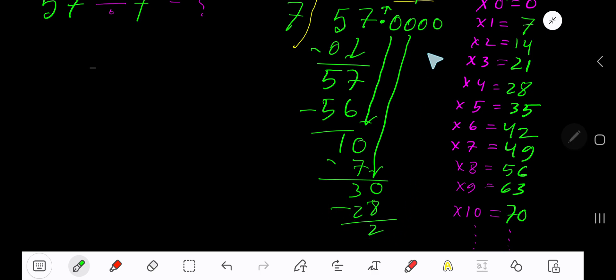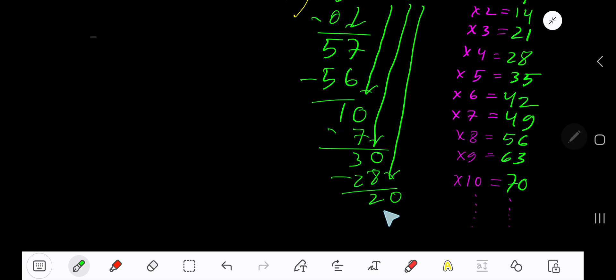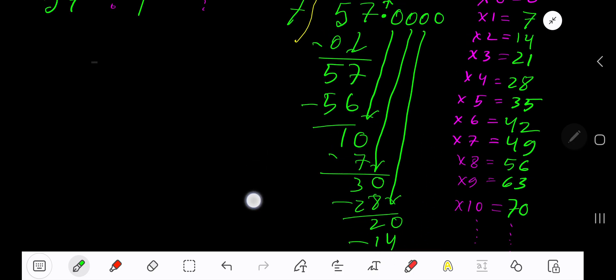7 goes into 30 how many times? 5 times 35, which is greater, so we have to take 4 times. 4 times 7 gives you 28. Subtract to get 2. Bring down another 0. Now 7 goes into 20 how many times? 3 times 21, which is greater, so 2 times.